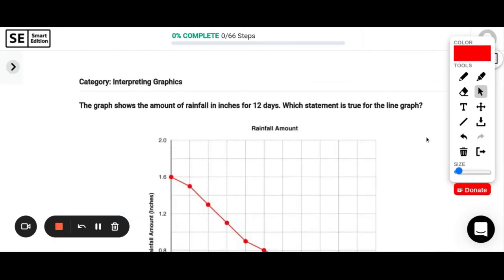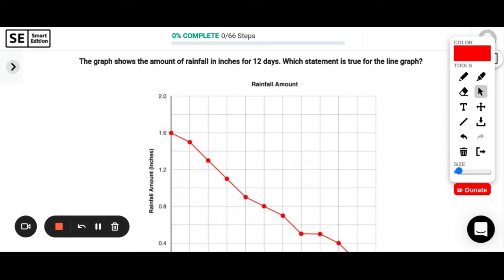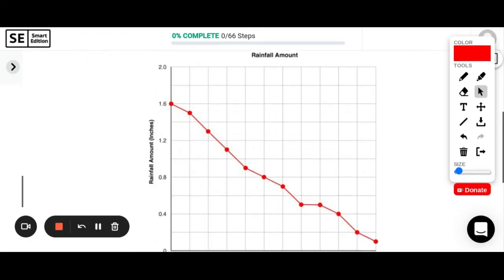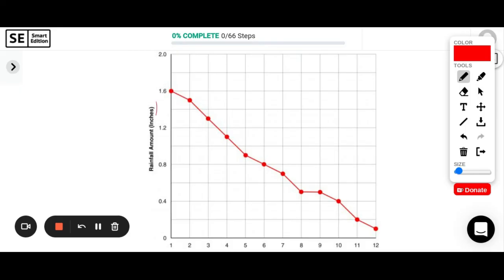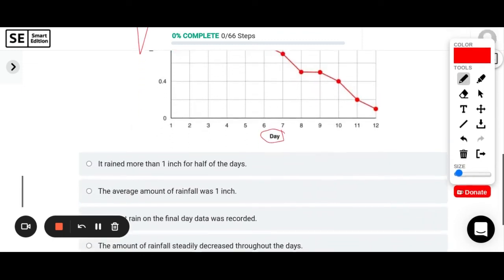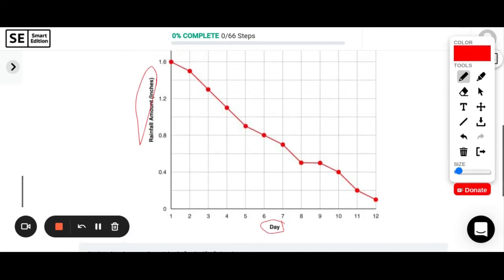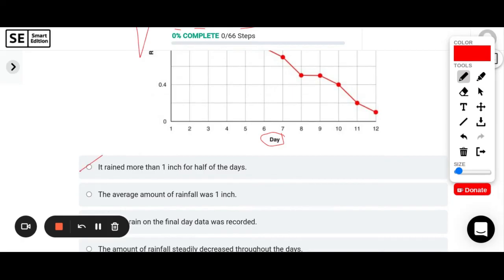And we have one more question to work through on our first part with no calculator. So this graph shows the amount of rainfall in inches for 12 days. Which statement is true? So when I look at this graph, I have vertically on this y-axis the amount of rainfall. And then on the x-axis horizontally, it tells me the days from one to 12. Okay, so let's see what is true. The first one says it rained more than one inch for half of the days. So one inch would be right here. And it looks like there's only four above that. Four days that it rained more than one inch, which is definitely not half of the days.